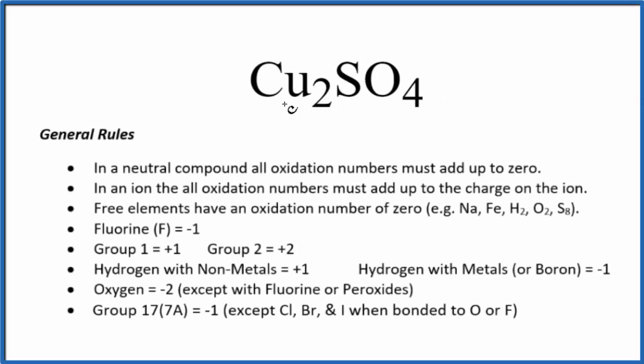To find the oxidation numbers for the copper in copper(I) sulfate, we'll use these rules here. Since copper(I) sulfate doesn't have a negative or positive sign after it, it is a neutral compound. All the oxidation numbers on each element are going to add up to zero.